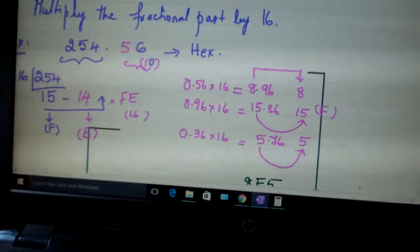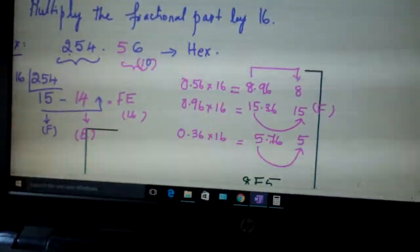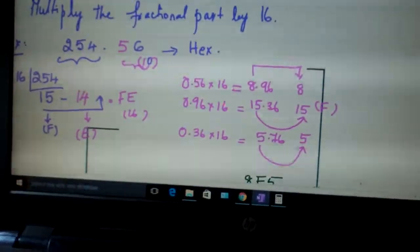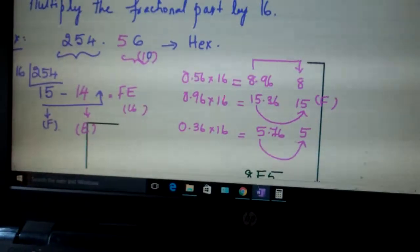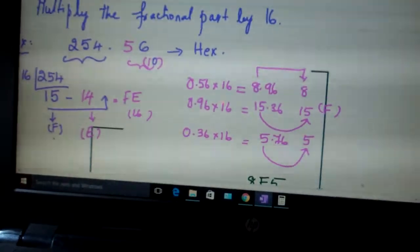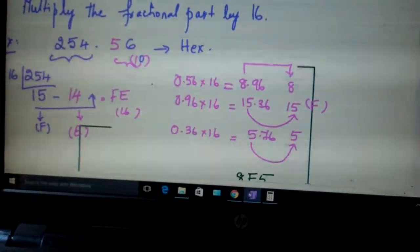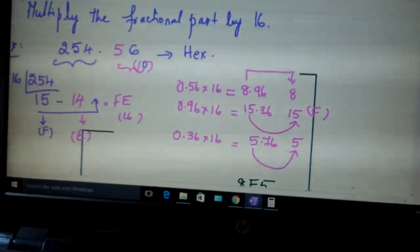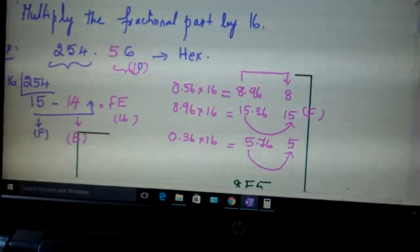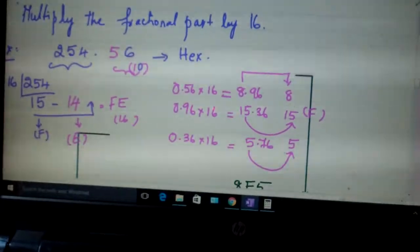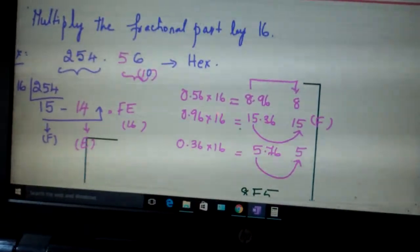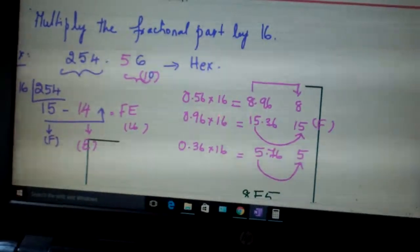In the next class we will discuss about the same procedure. Now we are converting it into hexadecimal. This part as usual. Here 15, which is nothing but F in hex. 14 is E. So you write it as FE. Then 0.56 multiply it with 16, you get 8.96. Write 8 here. 0.96 multiply with 16 and continue this procedure.